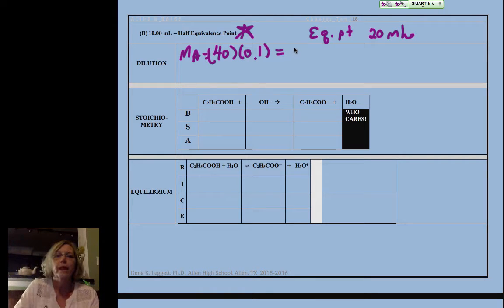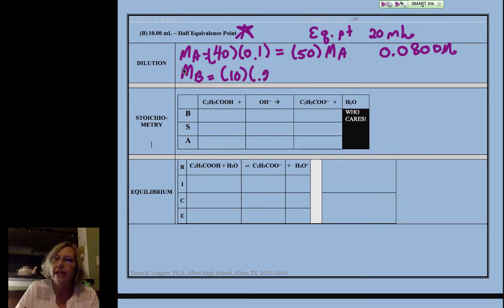I'm going to do the same thing for my base. I started with 10 mLs of base, it's 0.2 molar, it's the same final 50 milliliters, then I get my molarity of base and my molarity of base is 0.0400. You notice right away that my base is half as much as my acid, that's how I know that I'm halfway towards completing my titration.